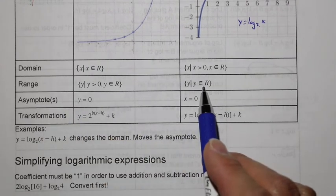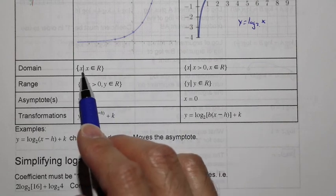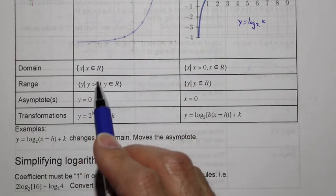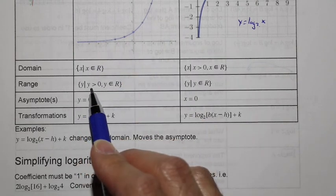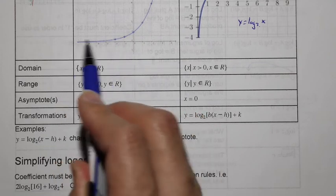Now remember with inverses, the domain and the range will interchange spots. And you can see here, the domain of the exponential function is x is any real number. The range of the exponential function is y is positive real number. The asymptote is the x-axis, y = 0.